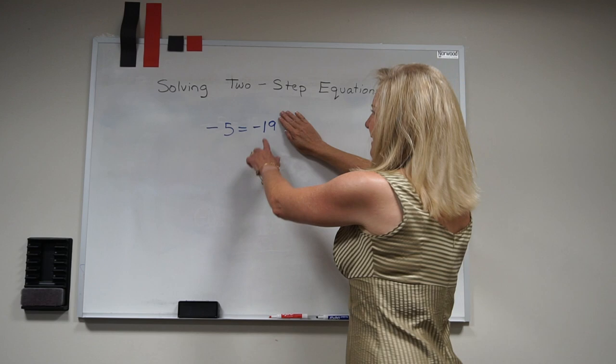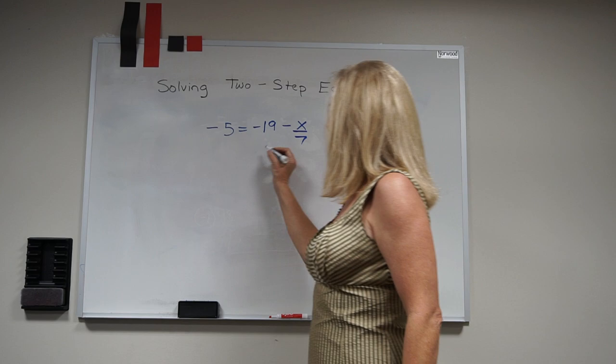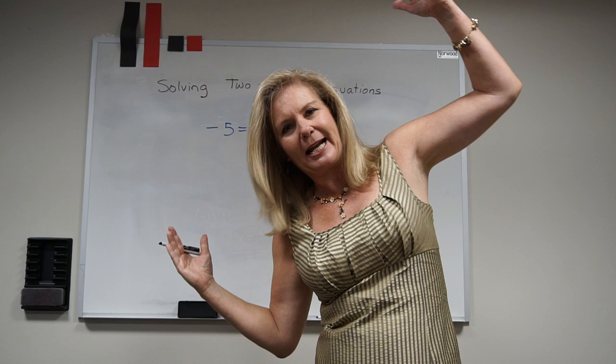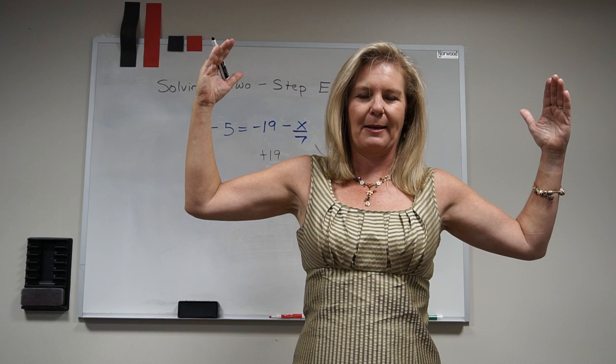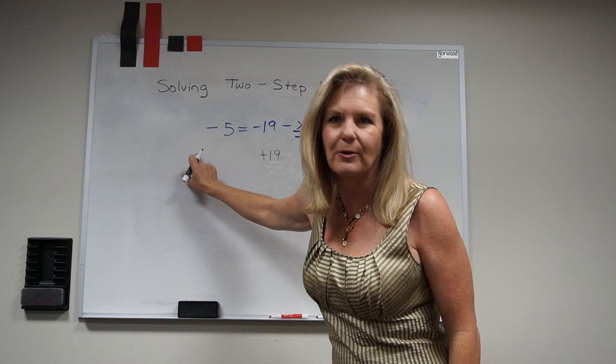Well, I'm gonna add 19. But the second I added 19, my balance went out of balance for my equation, and my job is to always pull that equation back into balance. So whatever I do on one side of that equal sign, I have to do on the other side of that equal sign.